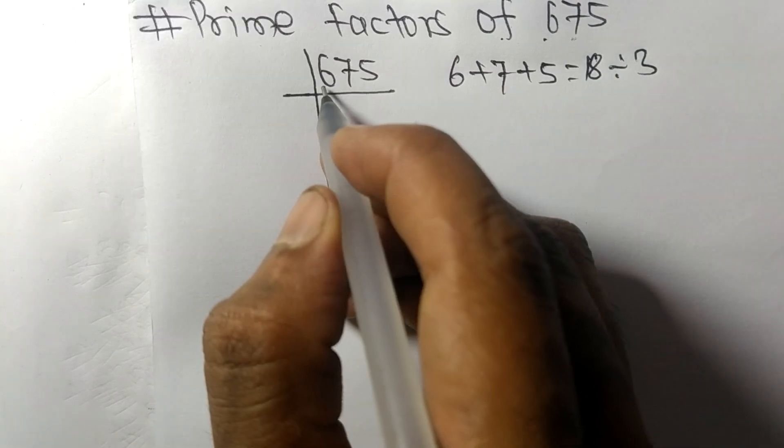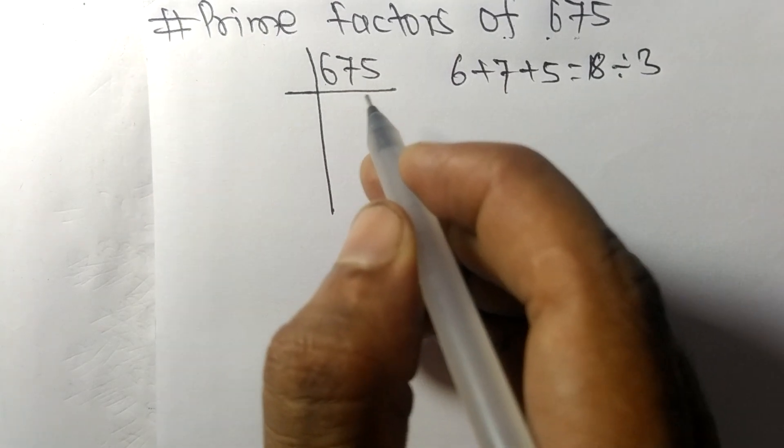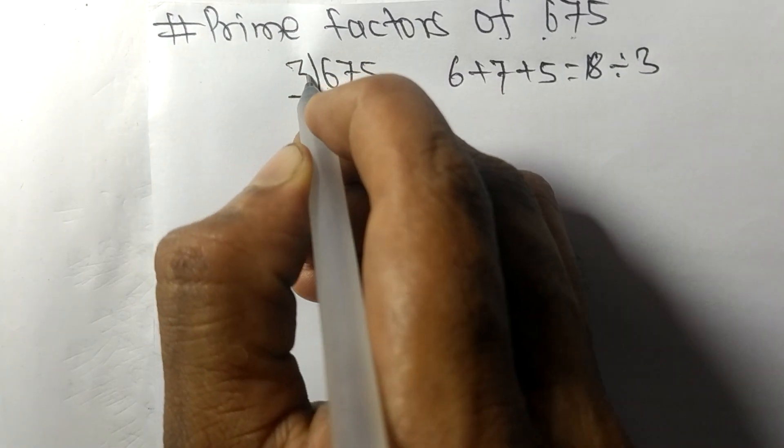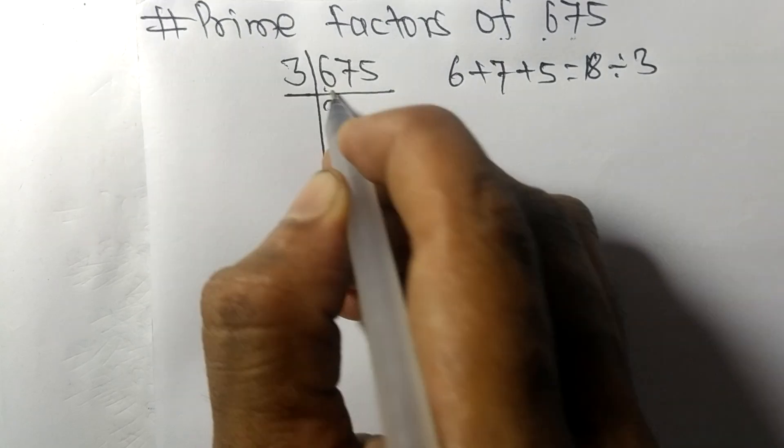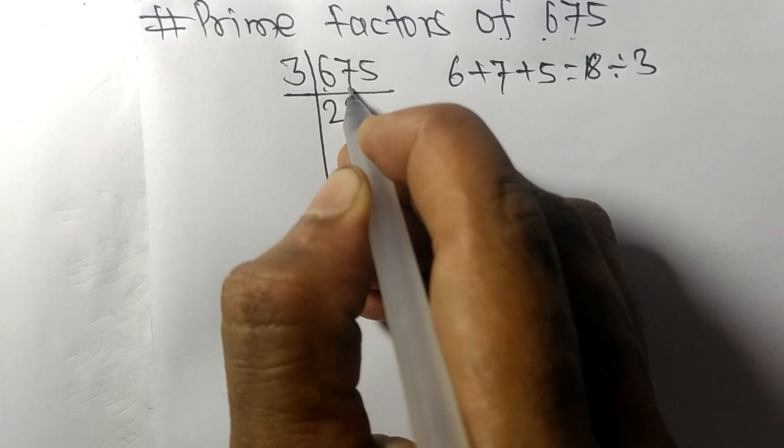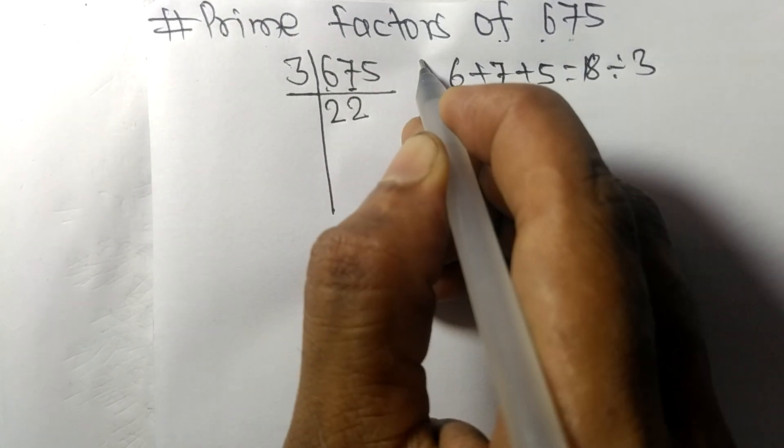3 times 2 is 6, remainder 1. This 5 makes 15. 3 times 5 is 15. So now we get 225.